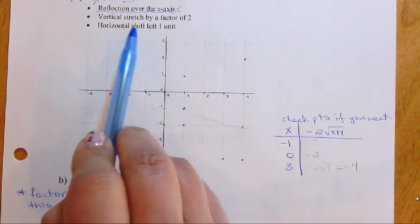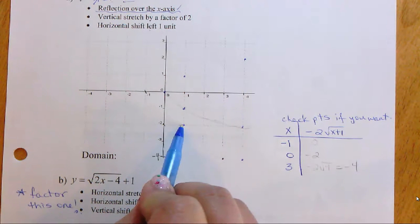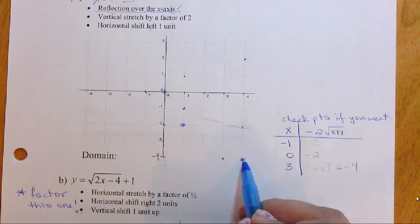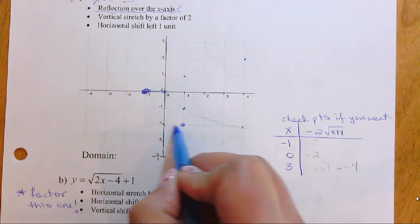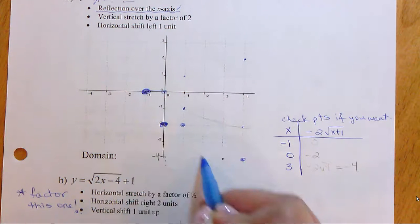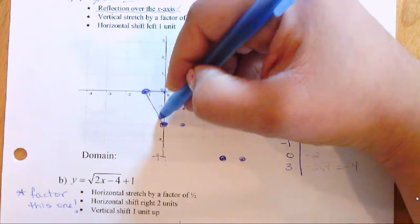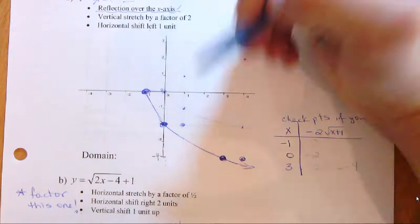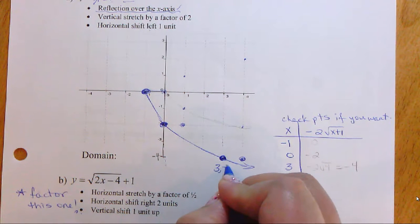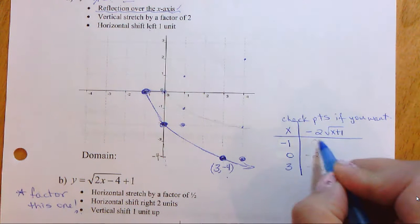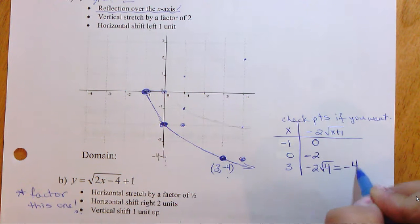Now we move everything with a horizontal shift left one unit. Taking our stretched-and-reflected points, each moves one unit to the left, giving us our final transformed positions. Make sure you indicate scale or label at least one point so you know what's going on. You can also double-check with a quick table of values to verify the numbers and confirm the graph is drawn correctly.